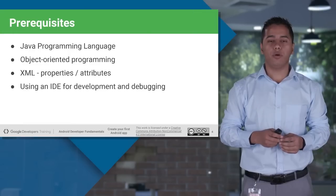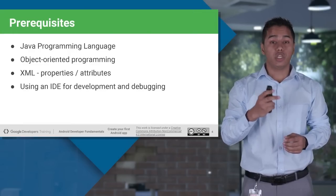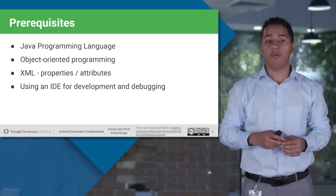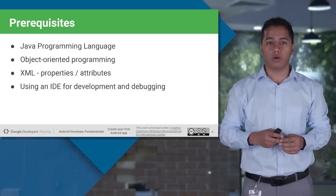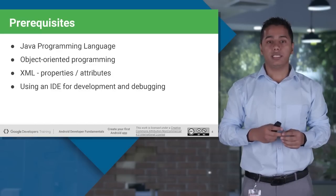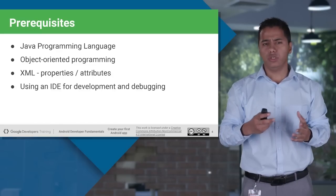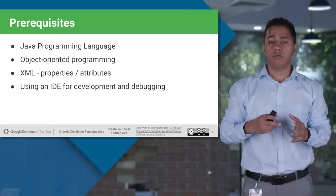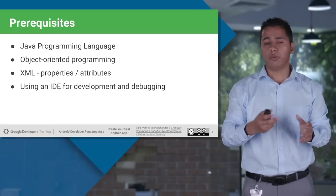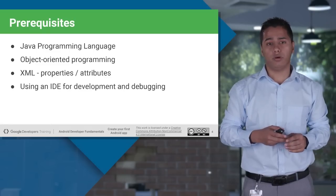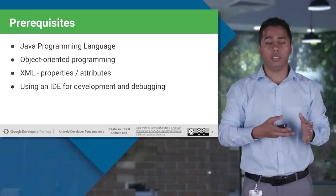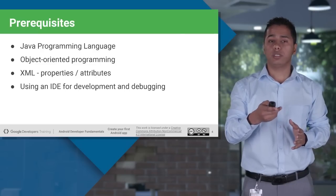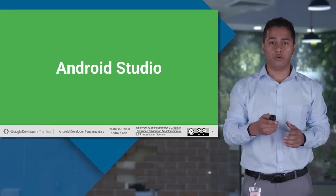The prerequisite for Android application development will be Java programming language, and you need to have a good idea about object-oriented programming. You also need to know XML — how exactly you put properties and attributes in XMLs. And you need to have a good idea of an IDE; a prior IDE you have used in the past will do. We will see how exactly we work around with Android Studio.